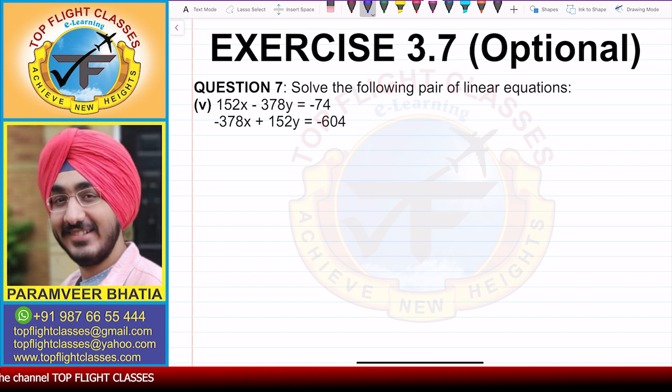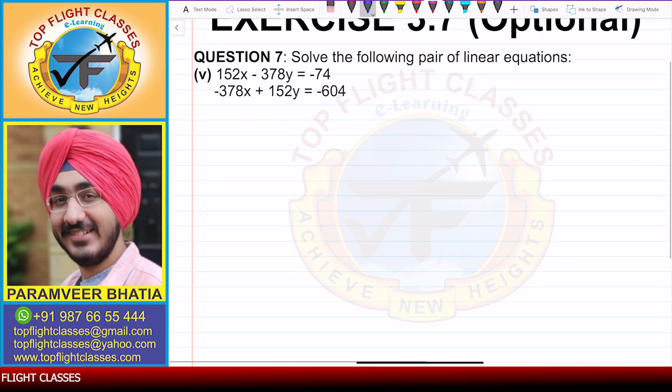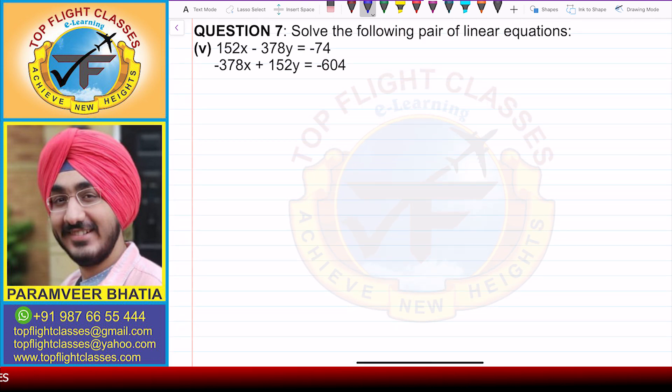So these are the equations that I have. Now to solve them, what we have to do. When we have such a question, we have one time y with -378 and x with -378 in the second equation. That means,